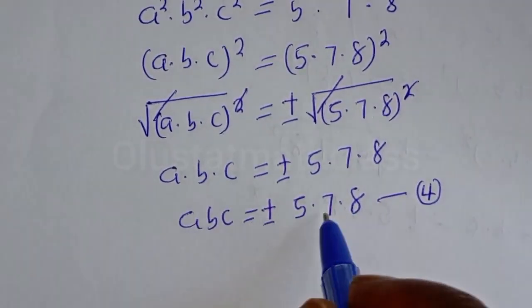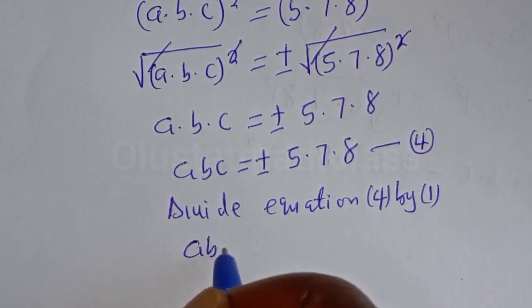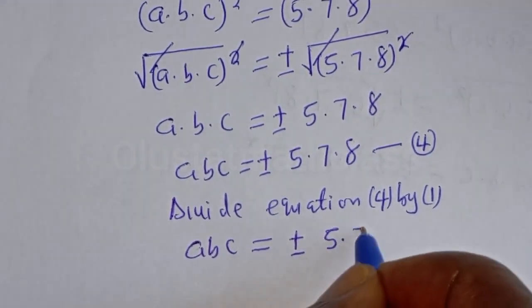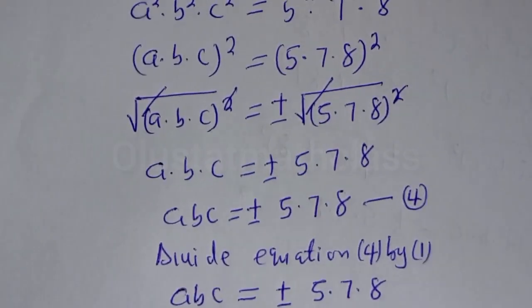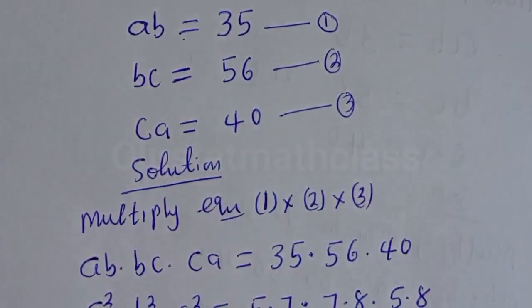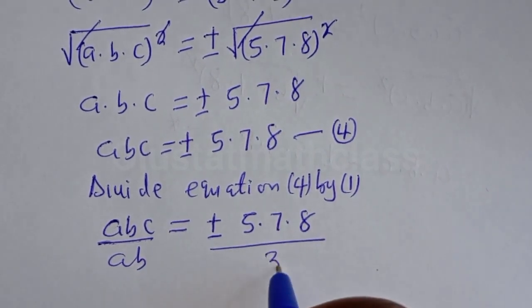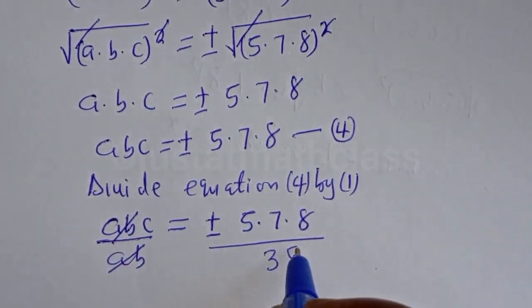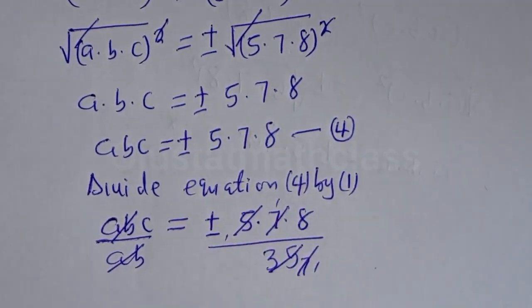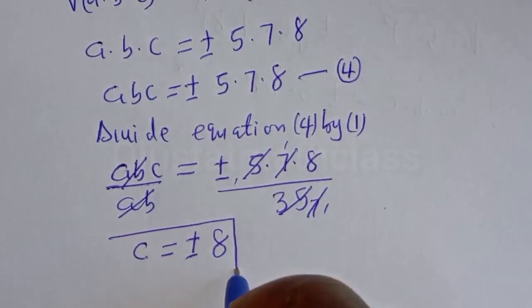Now let's divide equation 4 by equation 1. Equation 4 is ABC equals plus or minus 5 × 7 × 8, divided by equation 1, which is AB equals 35. The AB cancels, and 35 cancels with 5 × 7, leaving C is equal to plus or minus 8. This is the value of C.